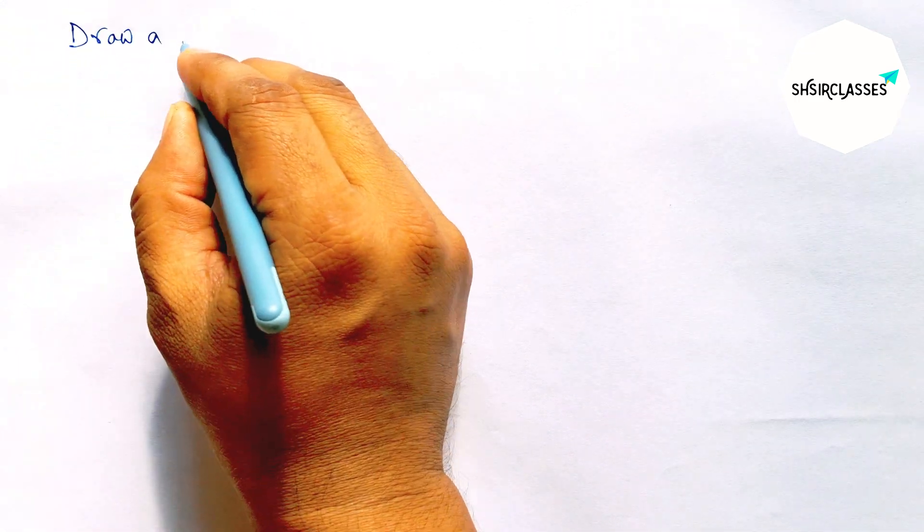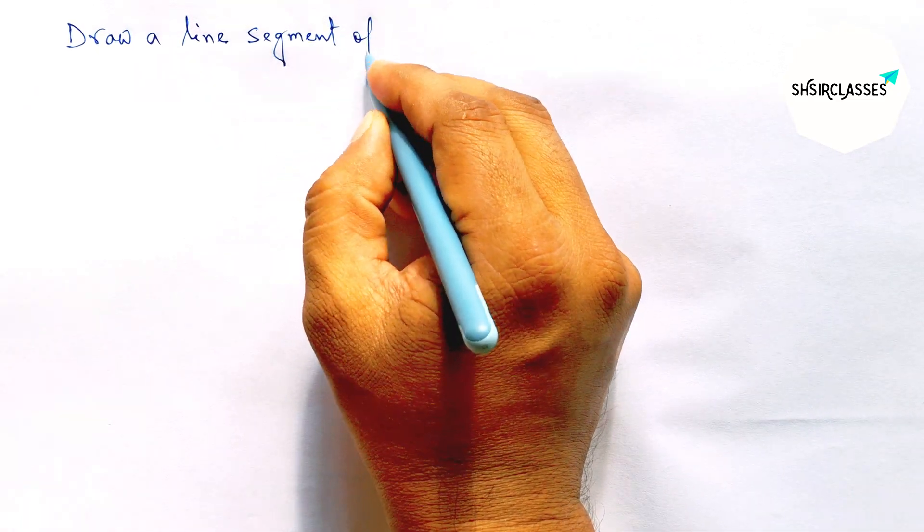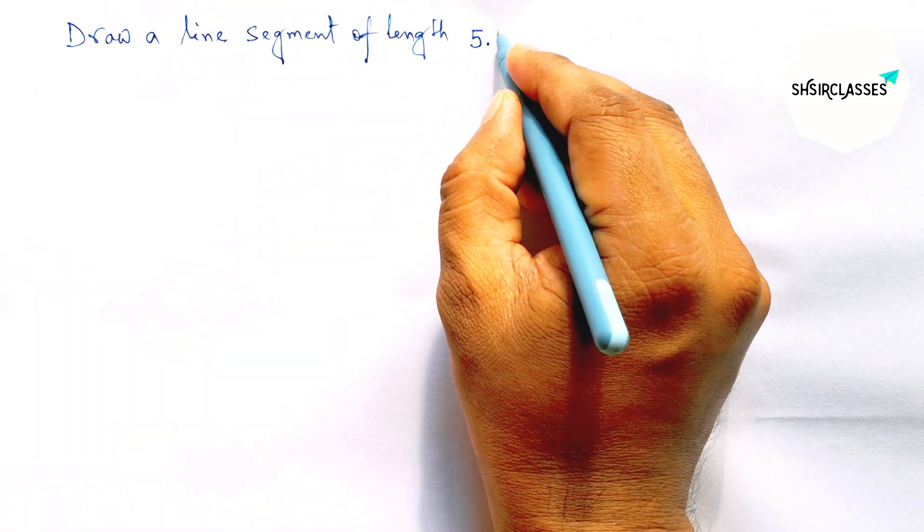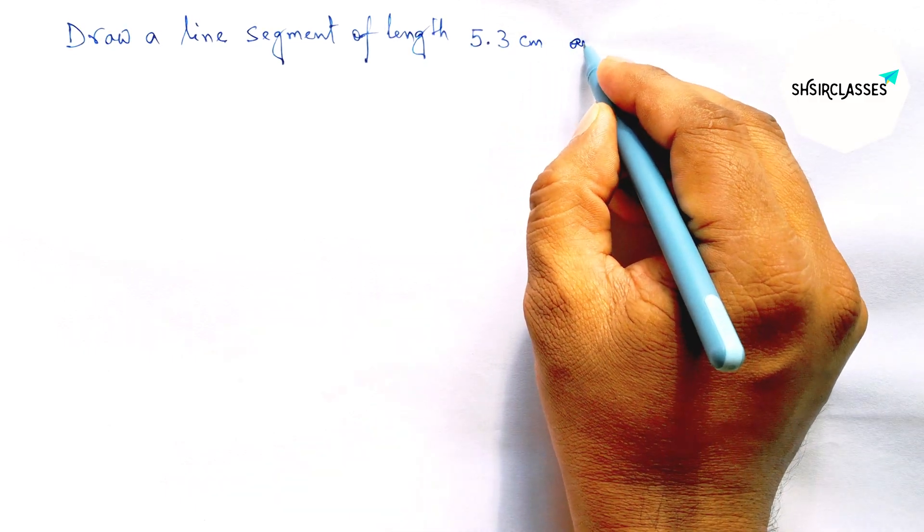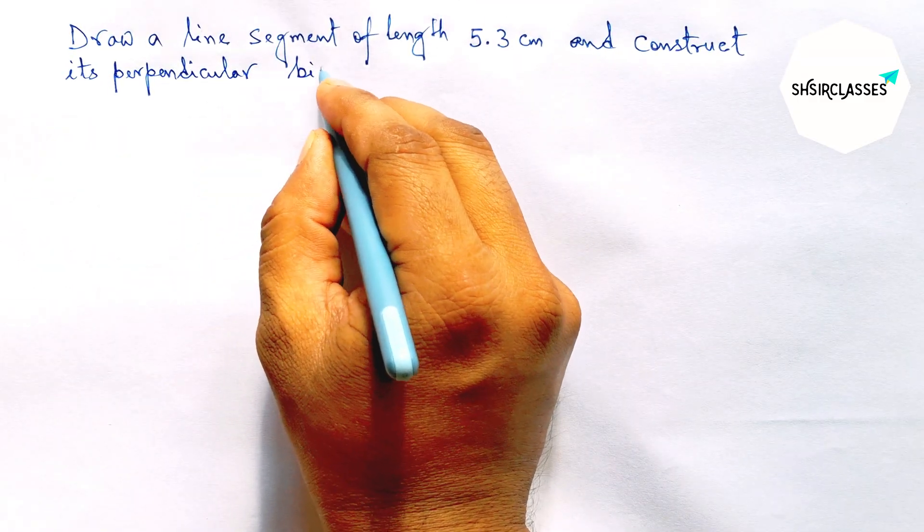Hi everyone, welcome to Shri Classes. Today in this video, draw a line segment of length 5.3 centimeters and construct its perpendicular bisector to this given line in an easy way.